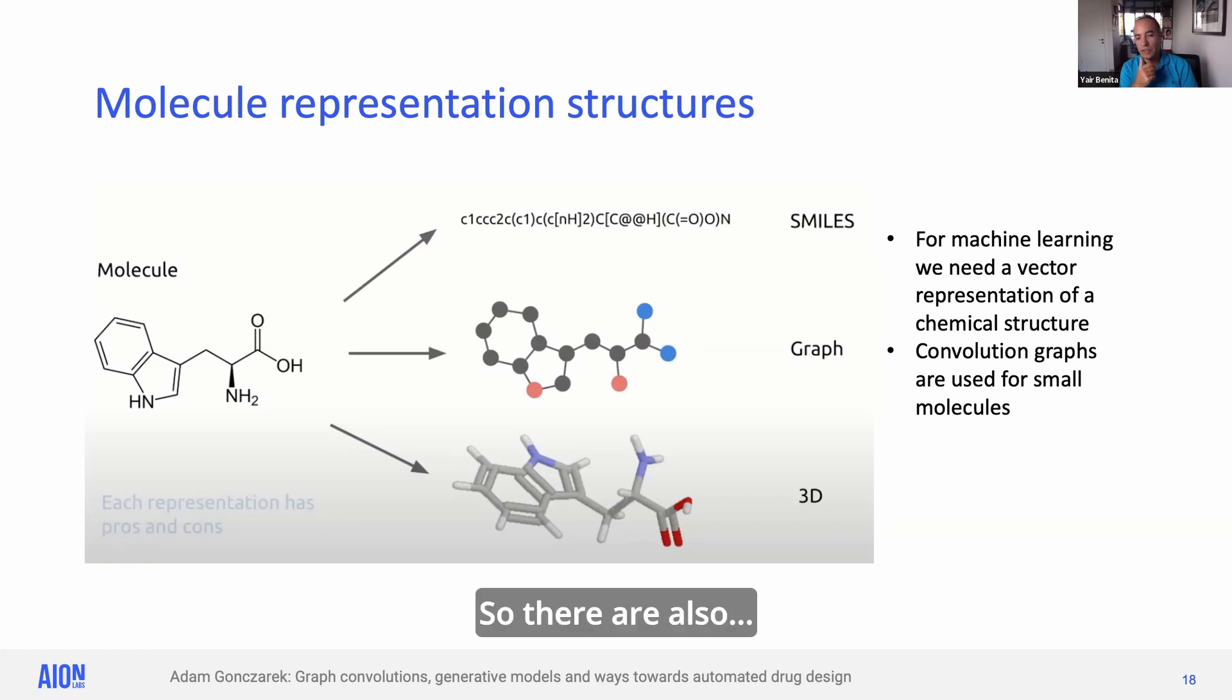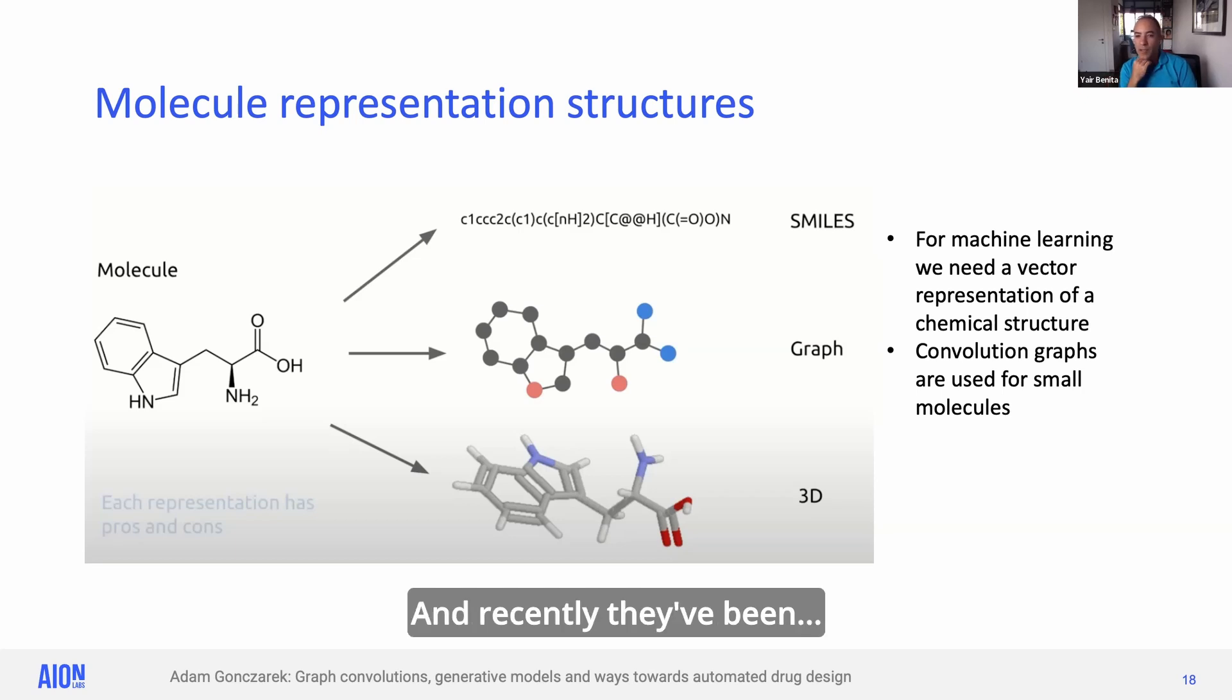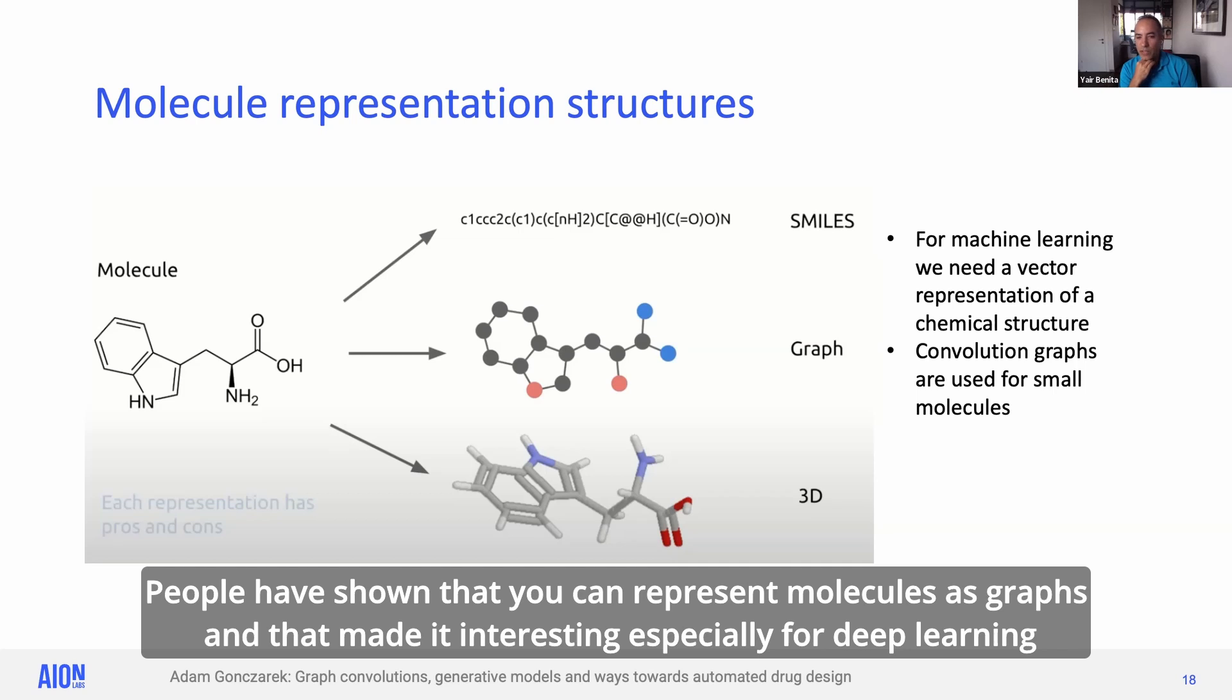So there are also, typically we use strings to define them. So SMILES is one technology of making a string. And then, of course, a computer can read a string. But recently people have shown that you can represent molecules as graphs. And that made it interesting, especially for deep learning.